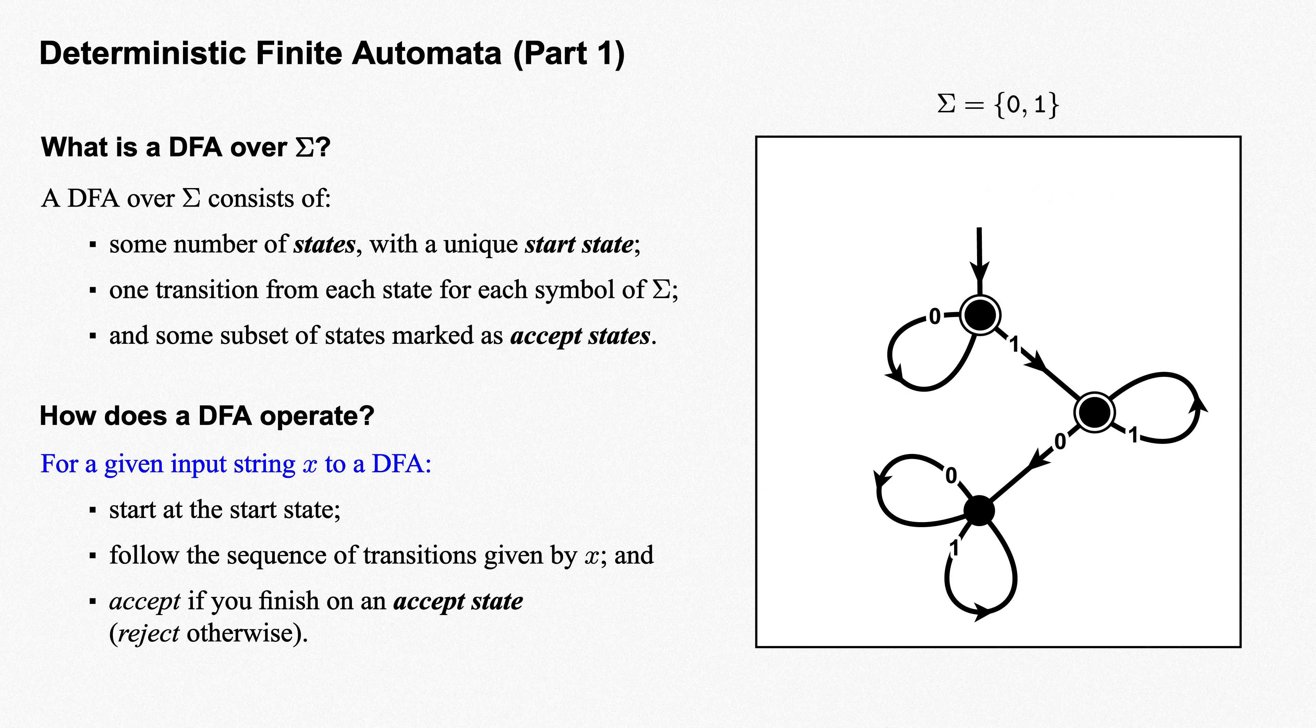In general, for a given input string x to a DFA, start at the start state, follow the transition given by each symbol of x in sequence, accept if you finish in an accept state, and reject otherwise.